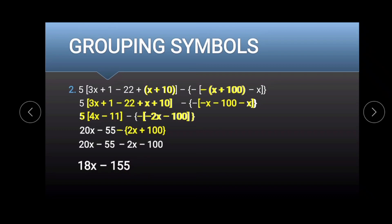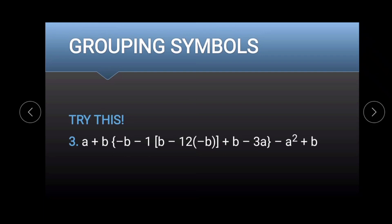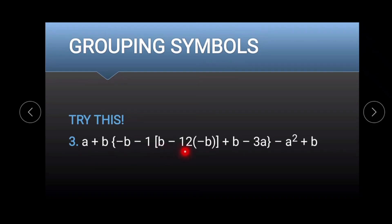So the final answer is 18x minus 155. Now I want you to try this example: a plus b minus b minus 1, b minus 12 times negative b plus b minus 3a minus a squared plus b.